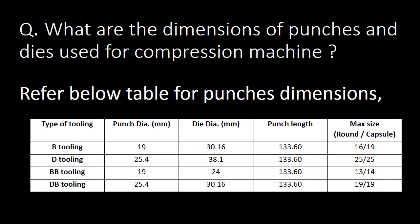Next question: what are the dimensions of punches and dies used for the compression machine? Refer to the table below for punch and die dimensions. The punch diameter of B tooling and BB tooling is the same at 19 mm, and the diameter of D tooling and DB tooling is the same at 25.4 mm. The punch length for all toolings — B, D, BB, and DB — is the same at 133.60 mm.